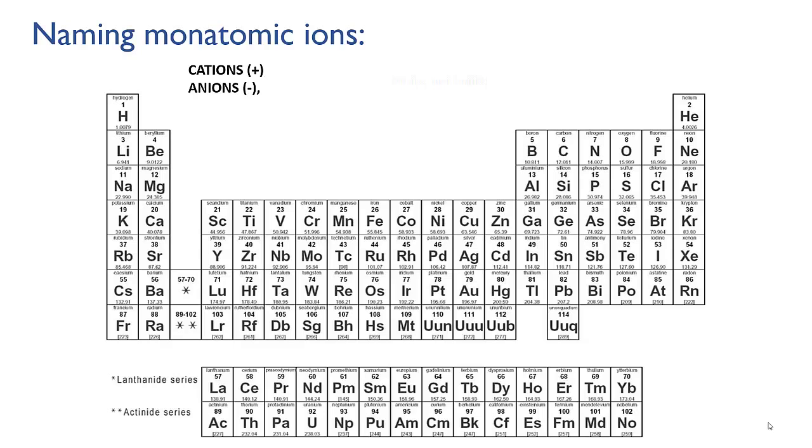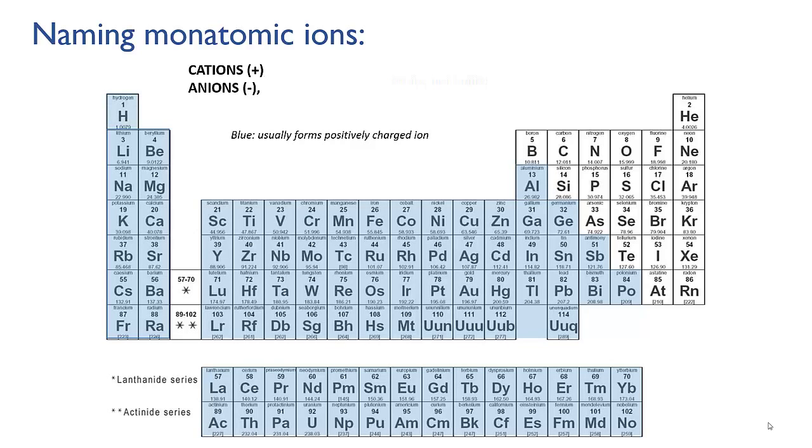So here's our periodic table and I'm going to shade the elements that usually form positive ions in blue. And this corresponds to the metals as well as hydrogen. Hydrogen can also form positive ions.